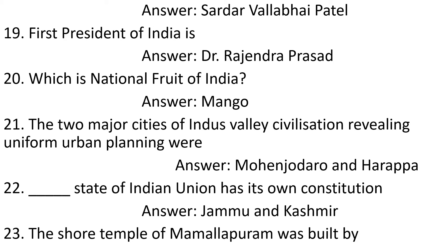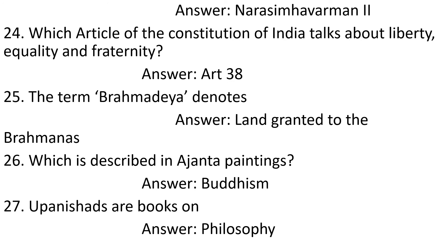Question 20: Which is the national fruit of India? Answer: Mango. Question 21: Two major cities of Indus Valley Civilization revealing uniform urban planning were. Answer: Mohenjo-daro and Harappa. Question 22: Which state of the Indian Union has its own constitution? Answer: Jammu and Kashmir.